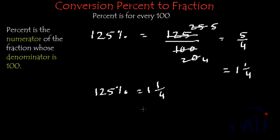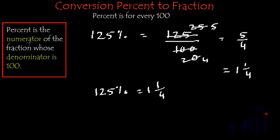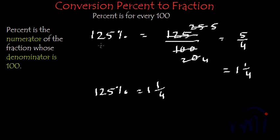To convert a fraction into percentage, we multiply the fraction by 100 — or multiply the numerator by 100 — and whatever we get is the percentage value. When converting a percentage into a fraction, we divide that percentage value by 100, and after solving that we get the fractional value. The fundamental of both these actions is: percentage is the numerator of the fraction whose denominator is 100. This was the conversion of percent to fraction, and in the next video we are going to learn how to convert a decimal into percentage.